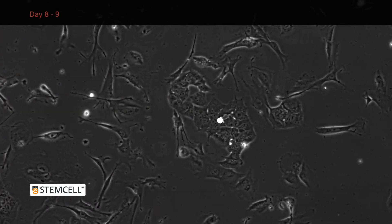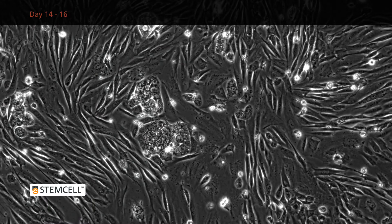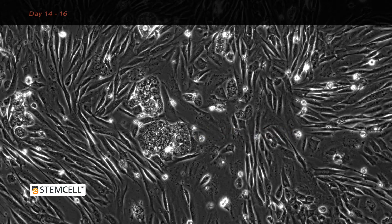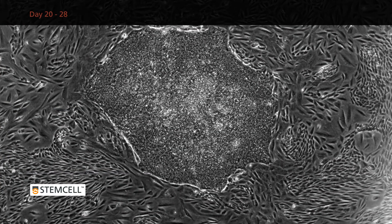Around day eight to nine, small epithelial-like cells will begin to appear. Around day 14 to 16, these cells will have developed into small clusters of tightly packed pre-IPS cell colonies. And by three to four weeks, large colonies with ES cell-like morphology will be present.